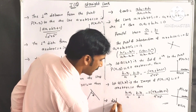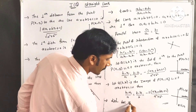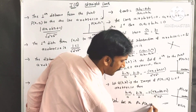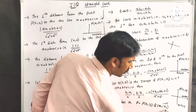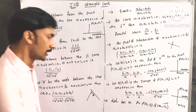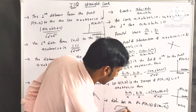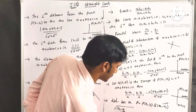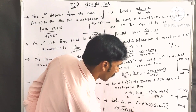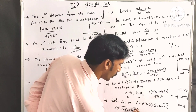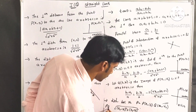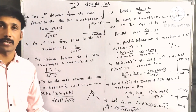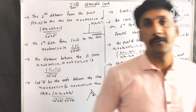The last formula: distance between two points P of x1, y1 and Q of x2, y2 is given by root of x1 minus x2 whole square plus y2 minus y1 whole square. This is the distance between two points formula.